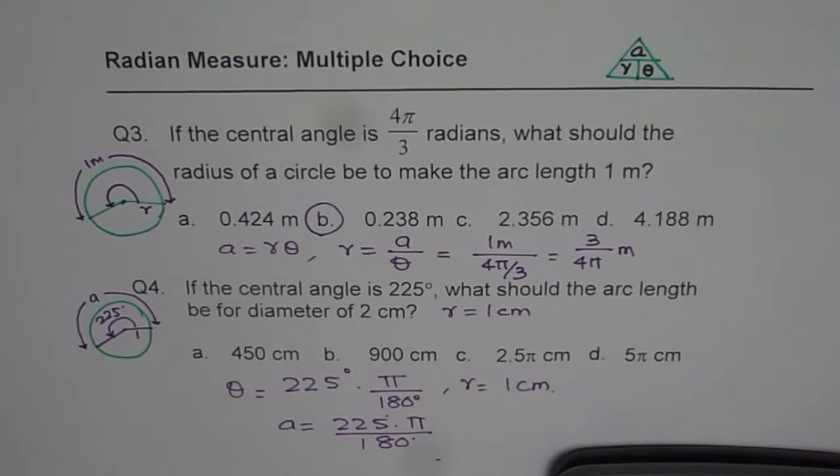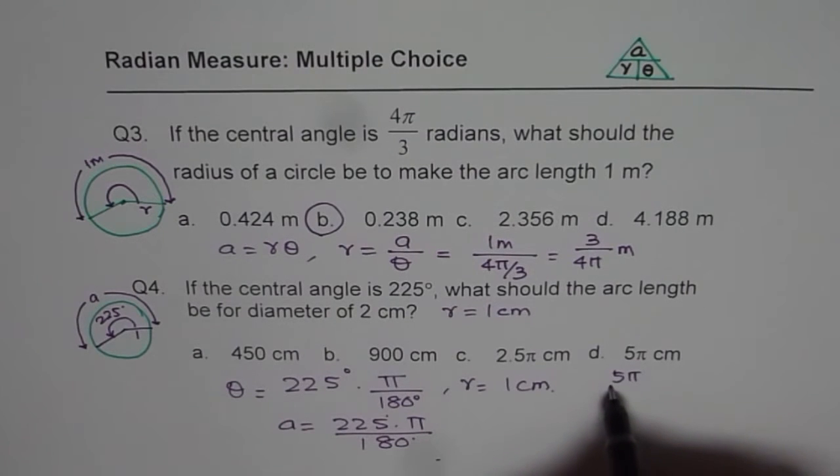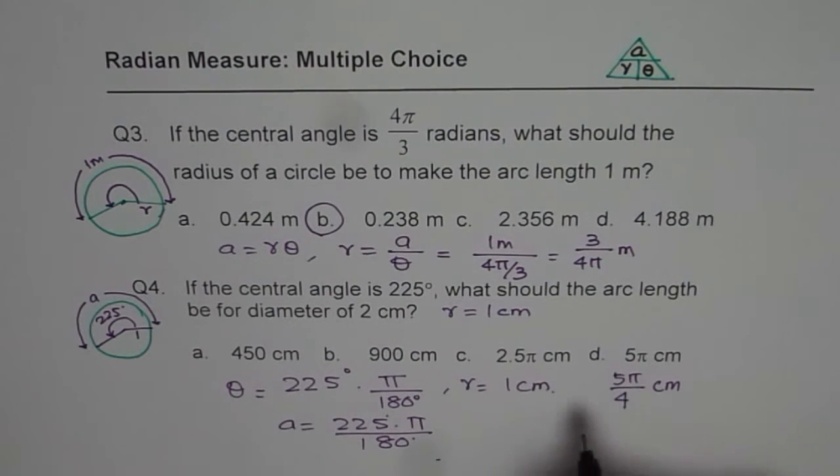So we get answer 5 by 4 pi, which is, well, so that answer is not there in our choices. So that means we will write down the answer as none of these, but the answer is 5 pi by 4 centimeters. So there might be a typing error here.